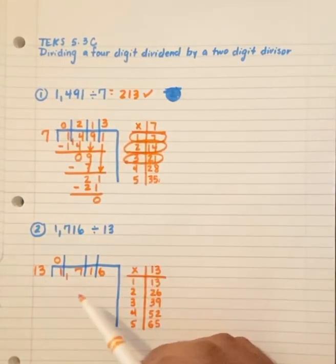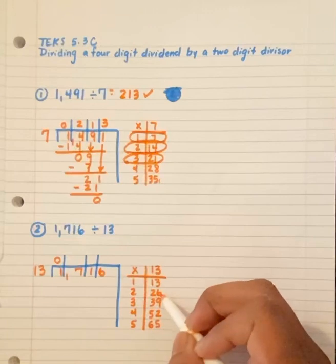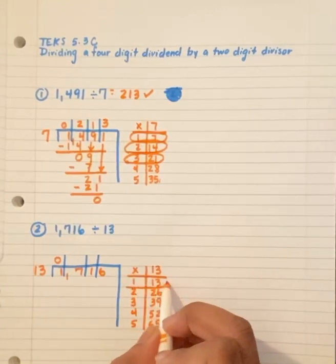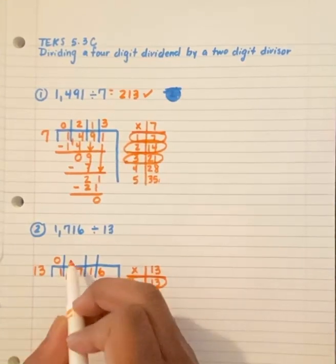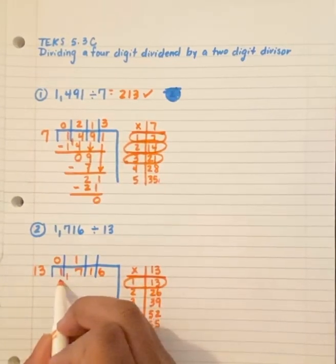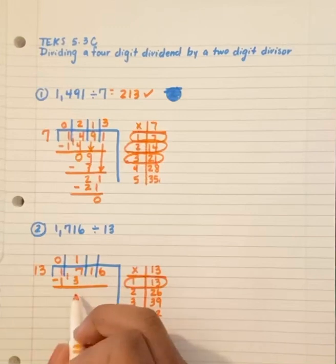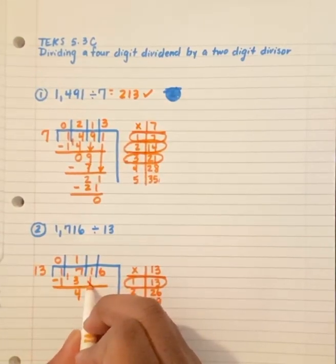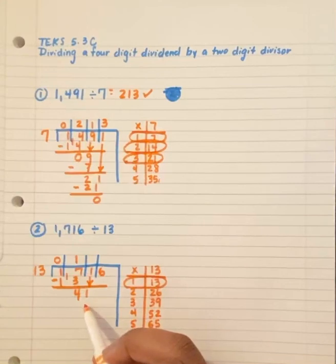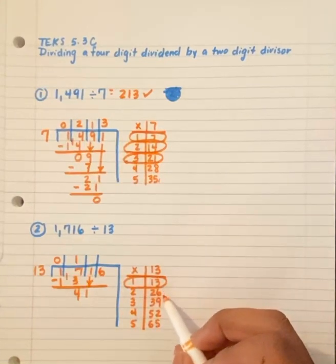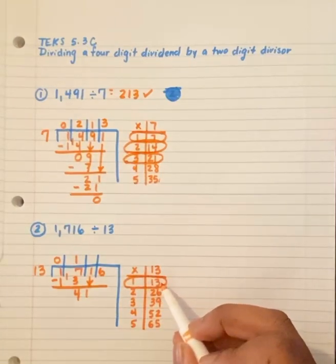Now, is there a number that's close to 17 without going over? Yes, 13. So, I circle this. 13 times 1 equals 13. The 1 goes above the 7. My 13 goes below the 17. I subtract. 7 minus 3 equals 4. And then I bring down the 1. Now, let's look at our list. Is there a number close to 41 that would not go over? It's the closest to 41, but would not go over 41. 39.